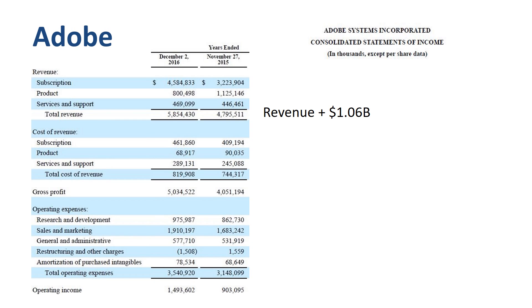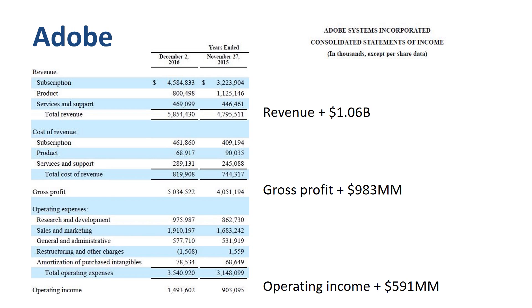What is very interesting for investors in Adobe is that the 1.06 billion in incremental revenue in 2016 vs. 2015 has generated 983 million in incremental gross margin. Despite the extra spending in R&D and sales and marketing, operating income has still gone up by 591 million. Adobe has a very high operating leverage — incremental revenue translates to a lot of incremental margin.